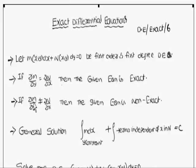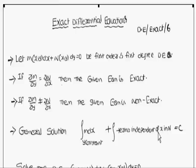If ∂M/∂y is not equal to ∂N/∂x, then the given equation is a non-exact differential equation. The general solution is given by the integral of Mdx treating y as constant, plus the integral of terms independent of x in N only, equals c. This step is very important.